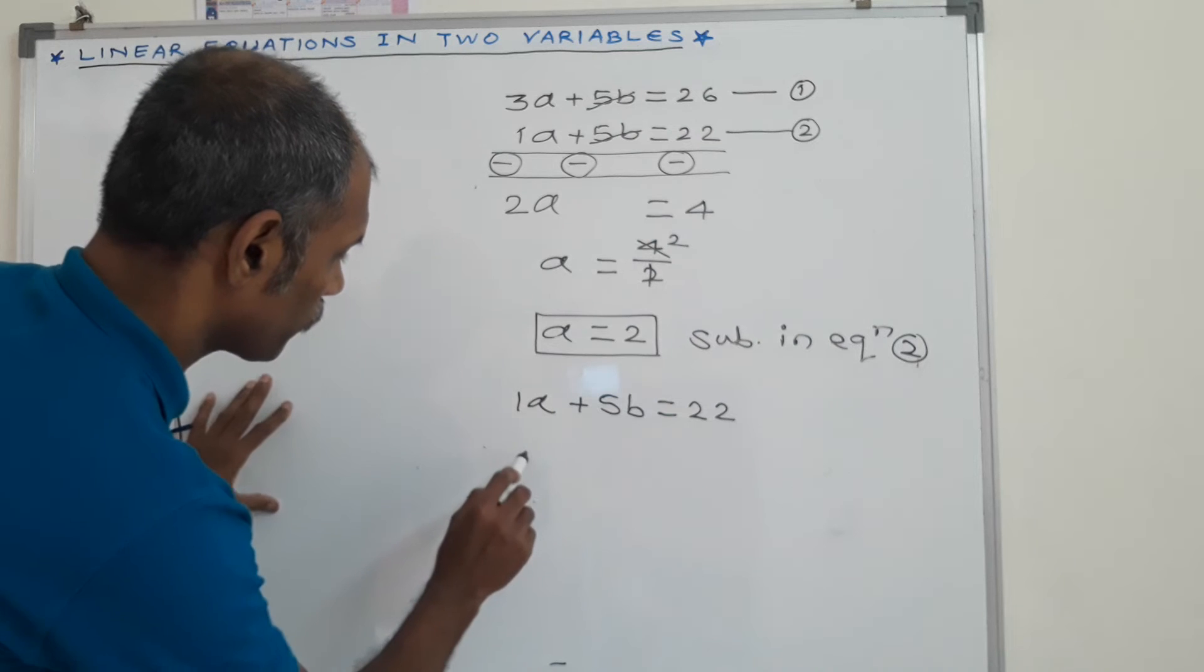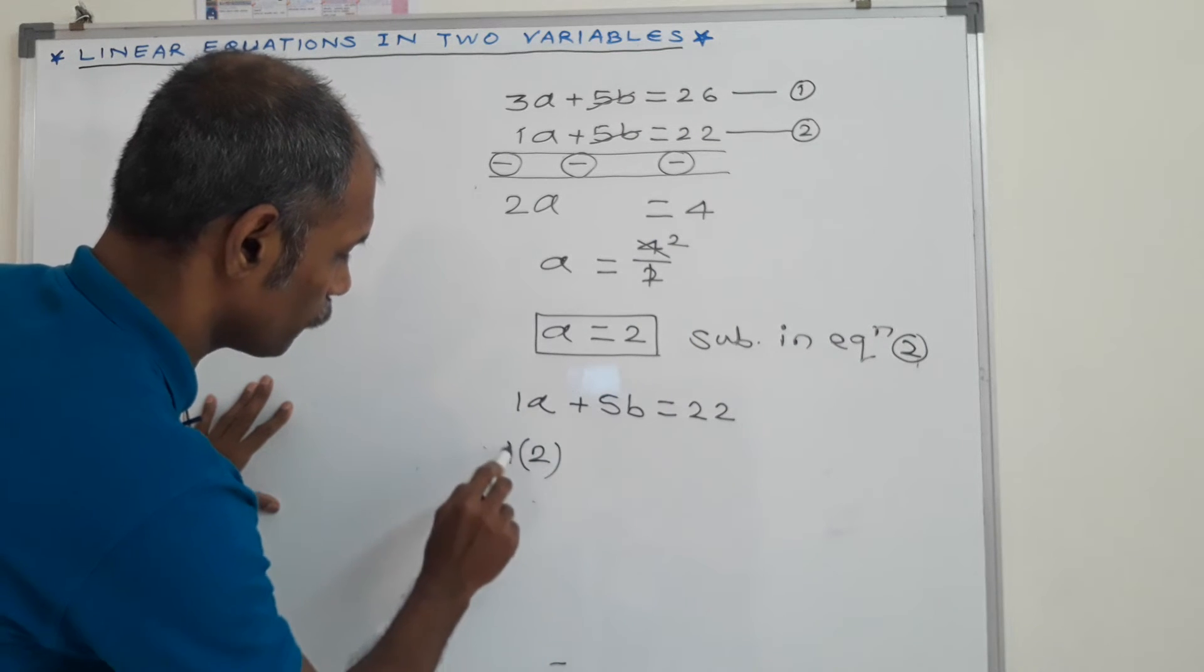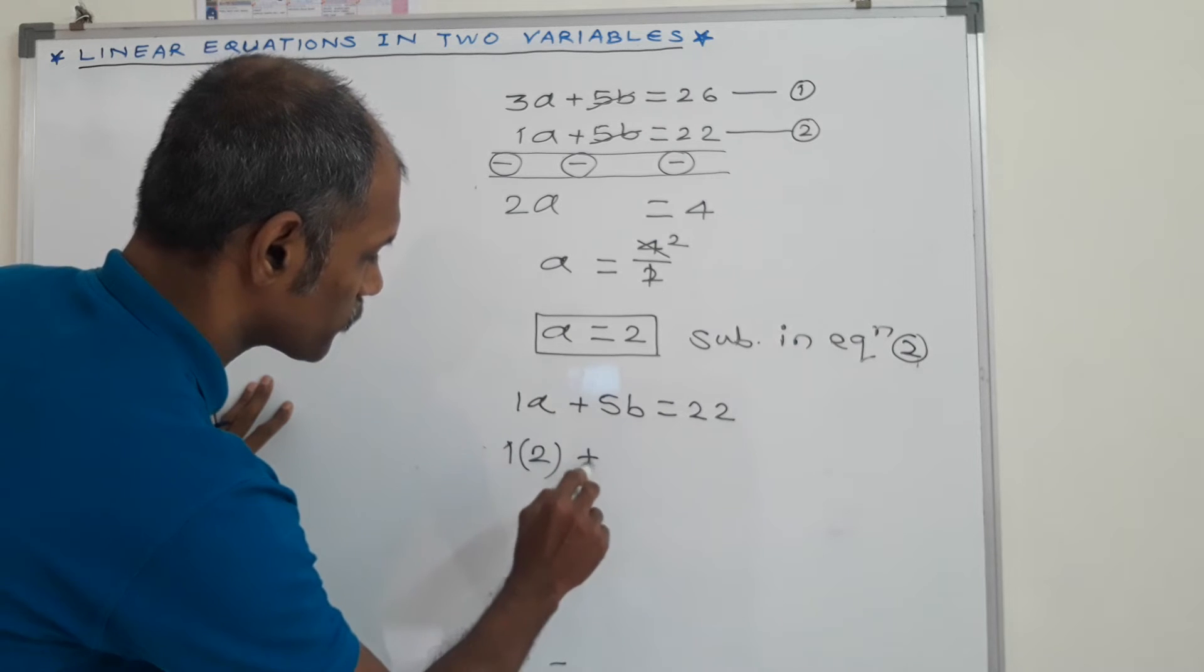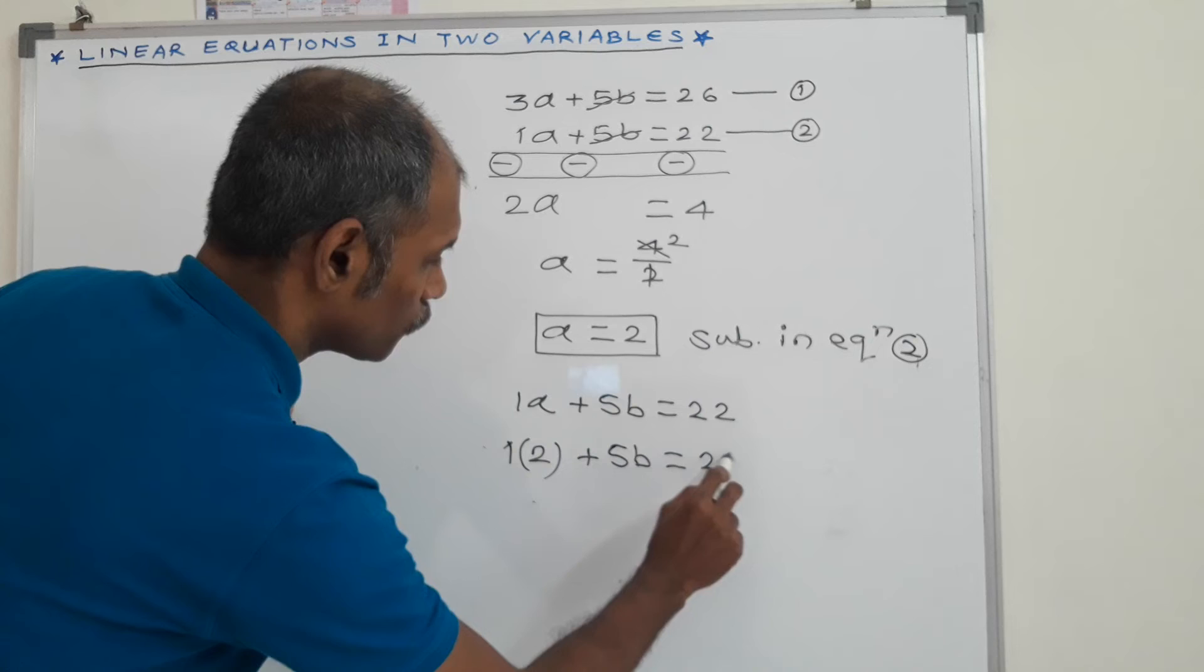We put here value of A as 2. That is 2 plus 5B is equal to 22.